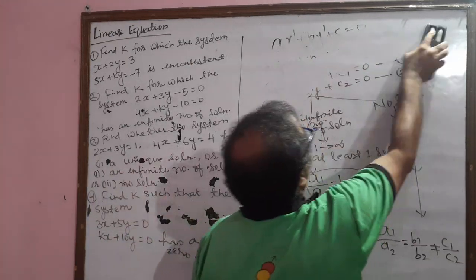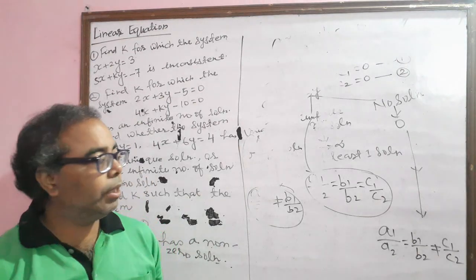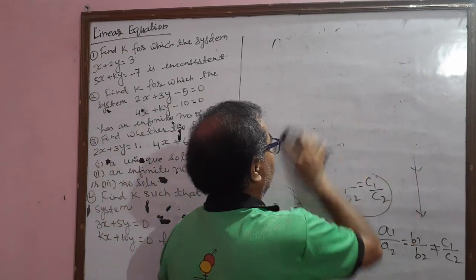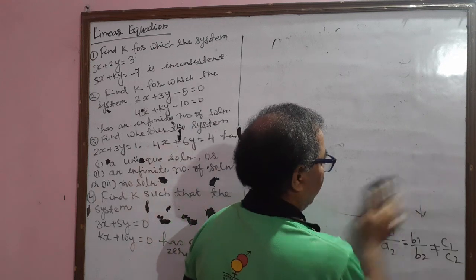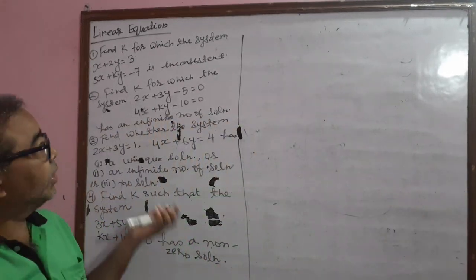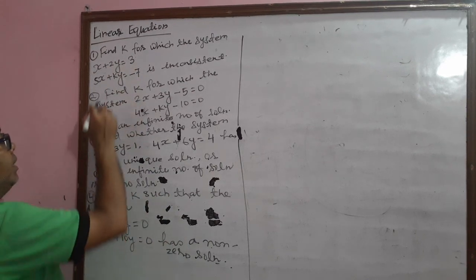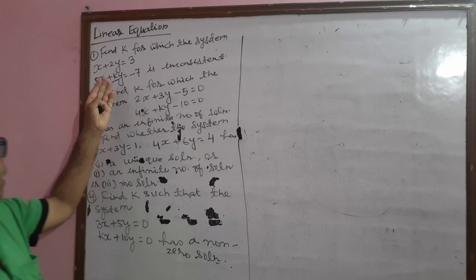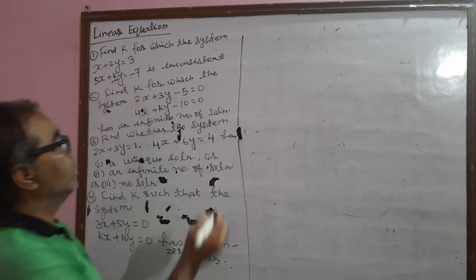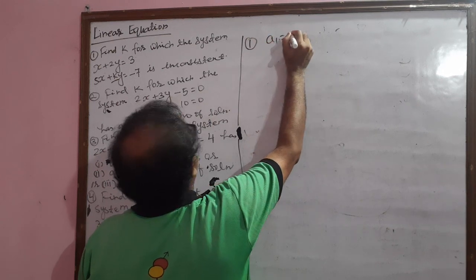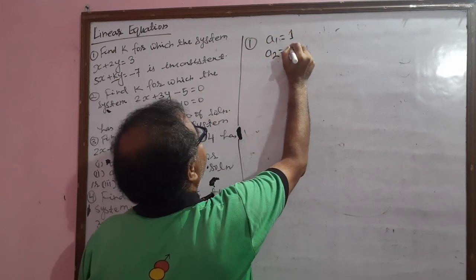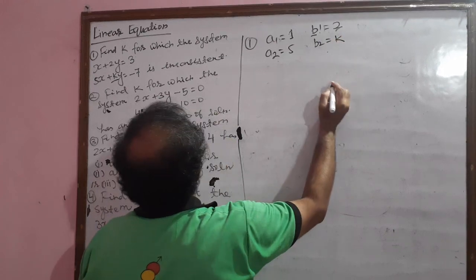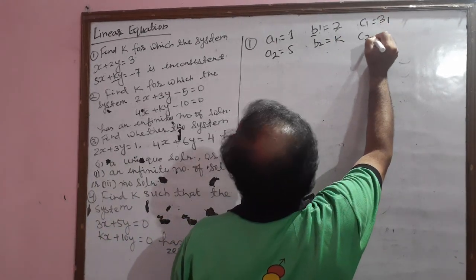These are the basic things regarding the linear equation. Now we are trying to solve some questions. Looking at the first question: find k for which the system of linear equations x plus 2y equal to 3 and 5x plus ky equal to minus 7 is inconsistent. Here a1 equal to 1, a2 equal to 5, b1 equal to 2, b2 equal to k, c1 equal to 3, and c2 equal to minus 7.